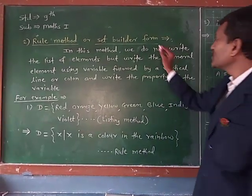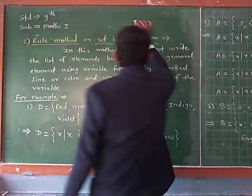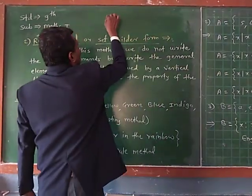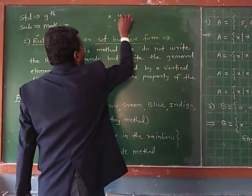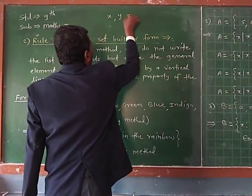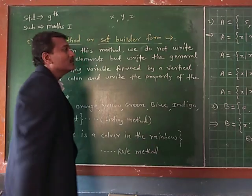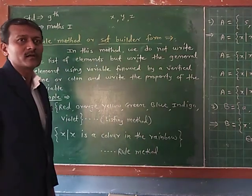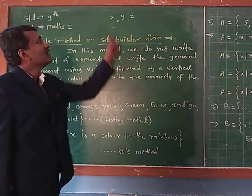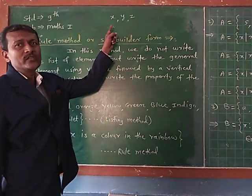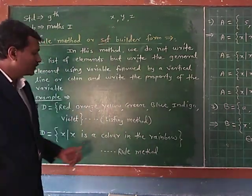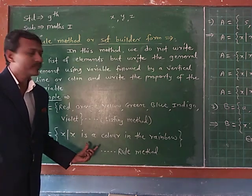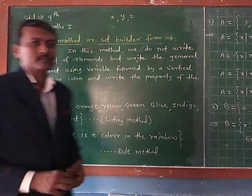Variable means suppose x, y, z — using small letters are called as the variables. We use variables in this method.